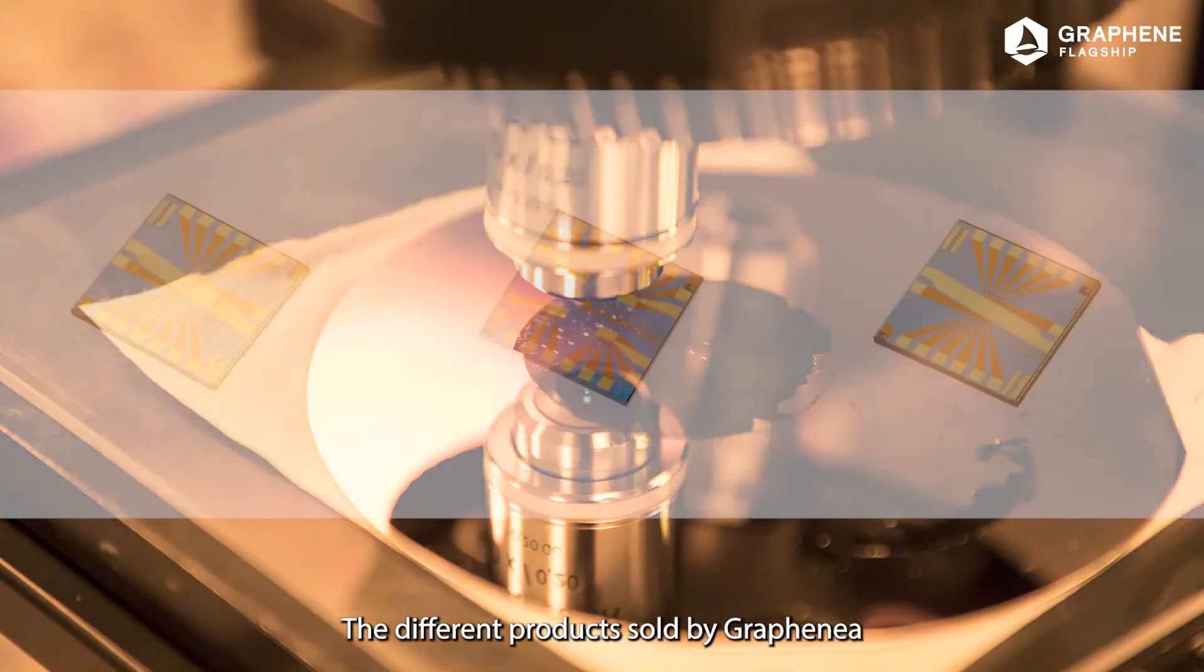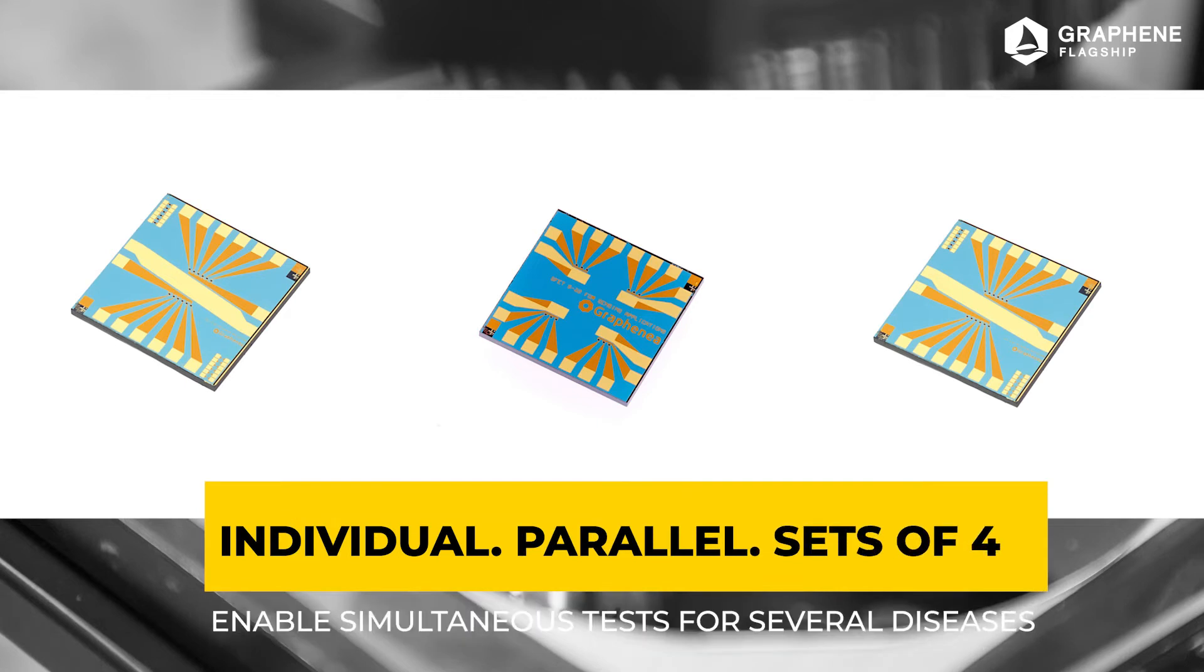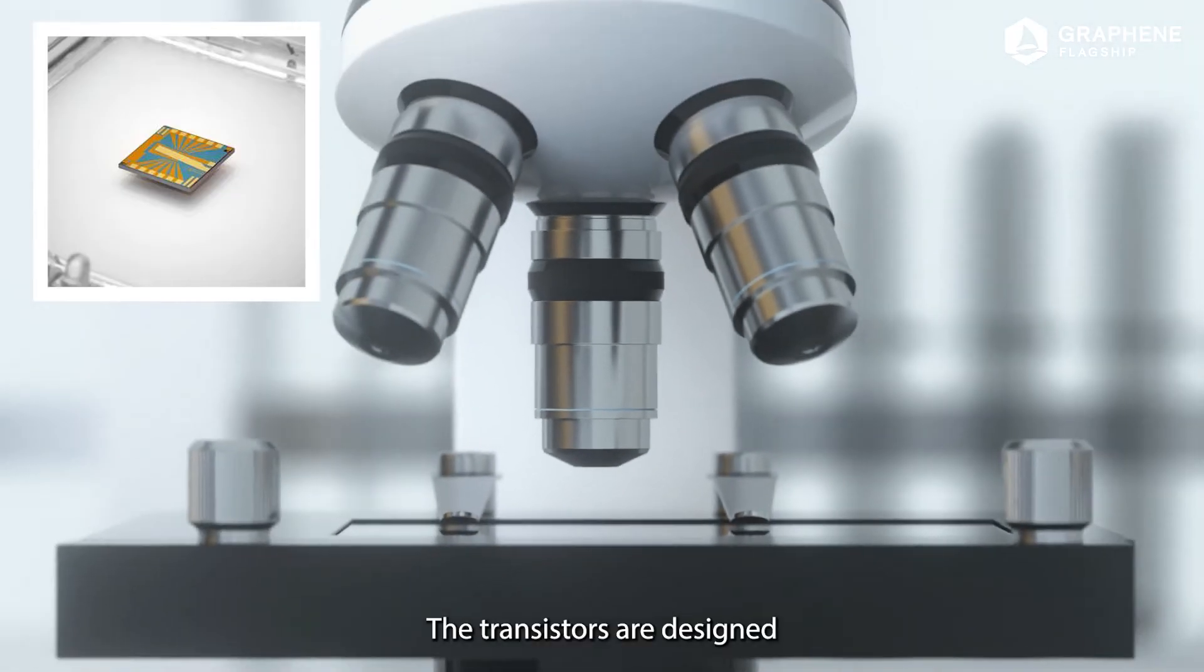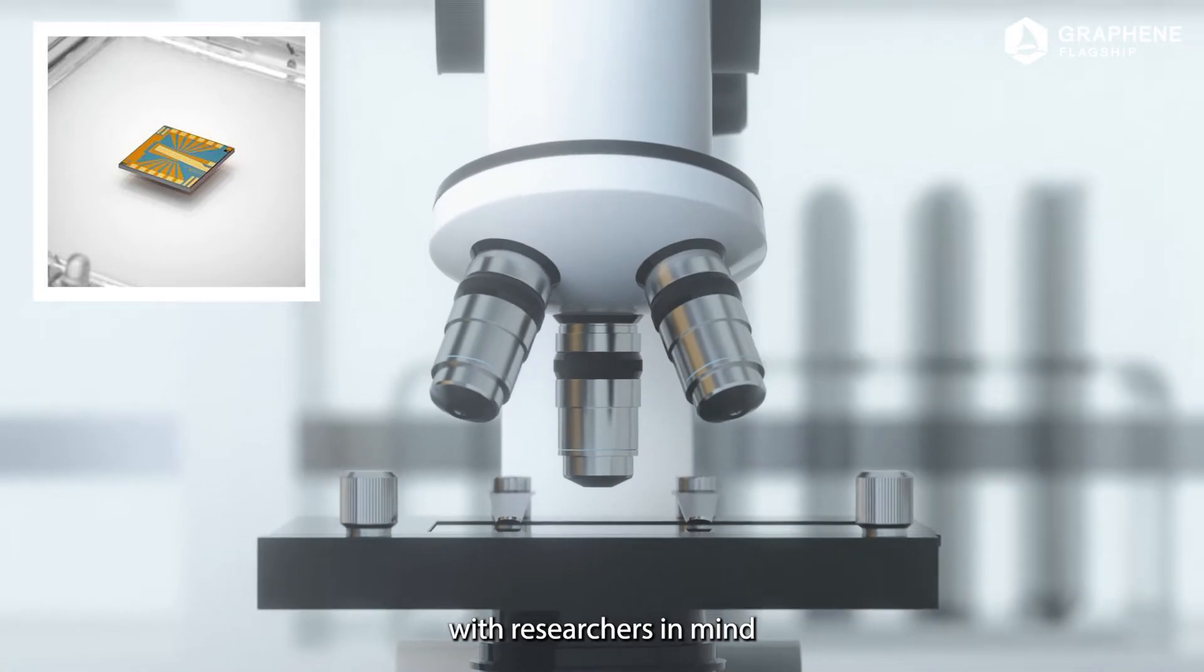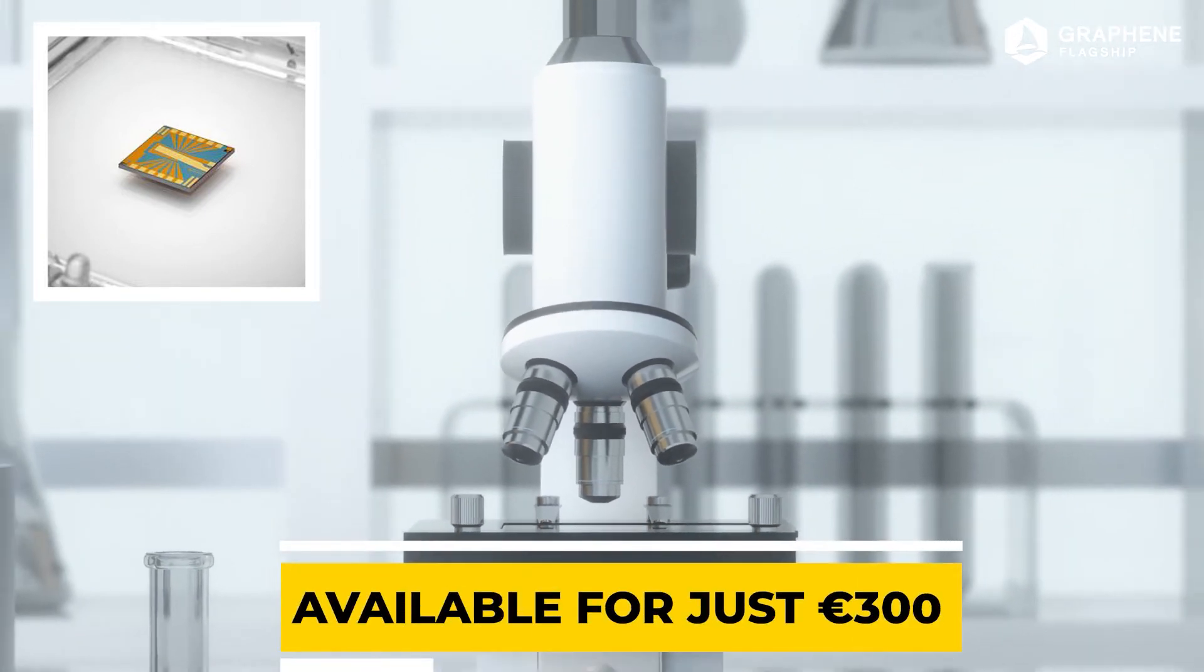The different products sold by Grafenaya allow for different configurations: individual channels, parallel channels, or sets of four individual channels which enables simultaneous tests for several diseases. The transistors are designed with researchers in mind, are ideal for manipulation in the lab, and are available for just 300 euros.